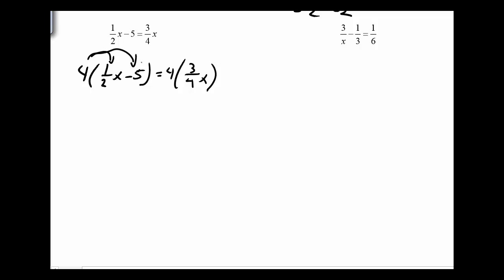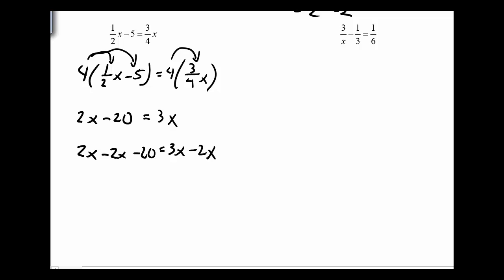I'm going to distribute those 4s in. 4 times one-half — a half of 4 is 2 — so we've got 2x there, minus 20. And three-fourths of 4: the 4s divide out and I'm left with just 3x. Then I subtract 2x from both sides: 2x minus 2x minus 20 equals 3x minus 2x. The 2x's cancel out and I'm left with negative 20. So our solution is x equals negative 20.